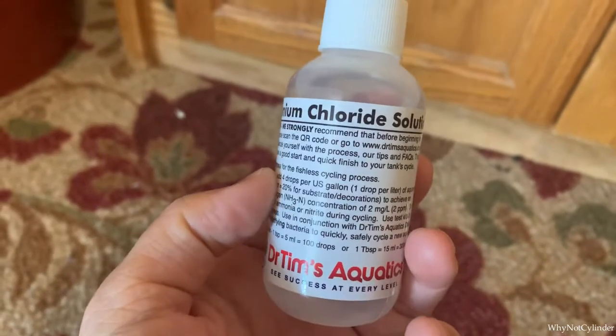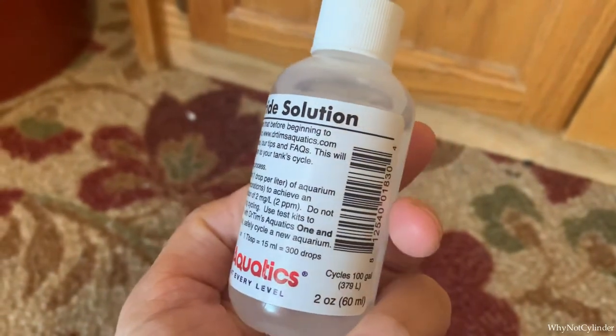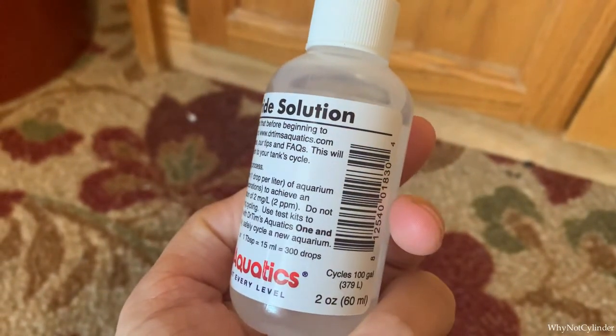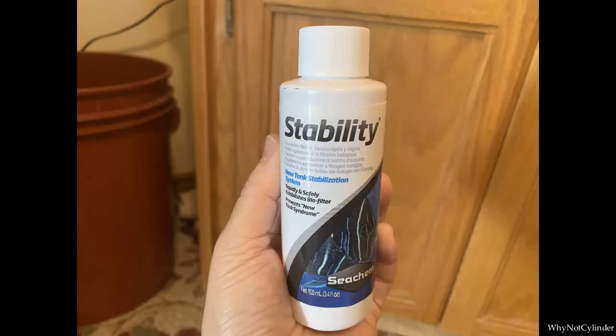For the ammonium source I am using an ammonium chloride solution. It's really important that you get something pure and don't take anything from for example your kitchen cabinet. And this is the product that I'm using for my beneficial bacteria supplement. It contains live bacteria that you can pour straight into the tank to help your culture grow.